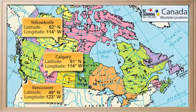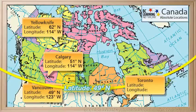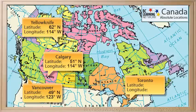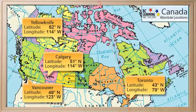One more — let's try one in eastern Canada. How about Toronto? Well, we can see that Toronto is below the 49th parallel, and actually it's quite a ways south of it. It's actually closer to the 40th parallel than the 50th — it's at about 43 degrees north. As for longitude, it's really close to the 80th degree line here, just a little bit east of it. So 79 degrees west.